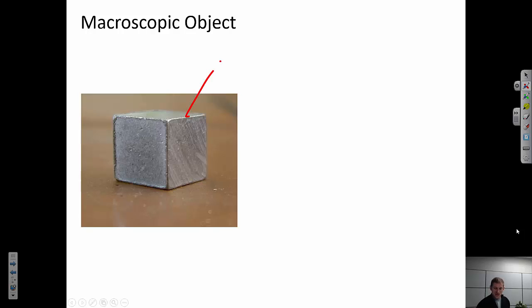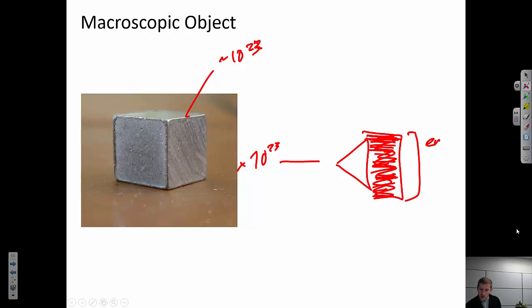If I have a macroscopic object, something that has maybe part of a mole of atoms, maybe it's a full mole of atoms, there's about 10 to the 23 atoms that are interacting here. So I'm going to start off with a large number of 3s orbitals. And again, they're going to split. And they're going to be so finely spaced together that I could consider this to be a continuum. And that continuum is what I call an energy band.